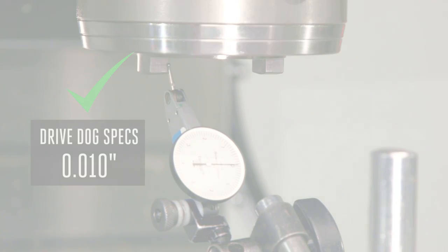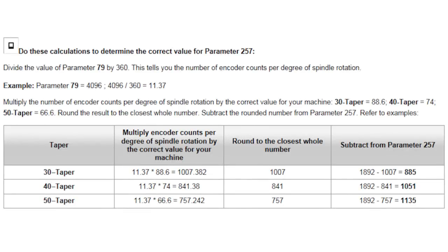Different spindle tapers require different calculations to complete the spindle orientation process. Here's a list for the 30, 40 and 50 taper. This machine is a 40 taper so we're going to use the value of 74 but we'll get into that in a minute.